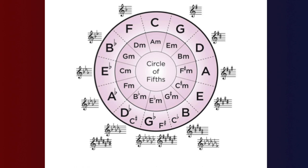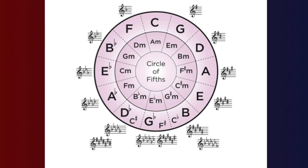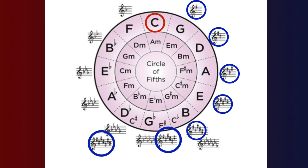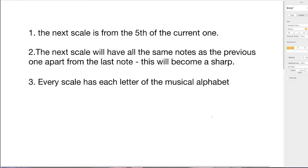I'd like to introduce the circle of fifths, which will be very useful for learning all of this. It's called the circle of fifths because if you start at C at 12 o'clock and go clockwise, the next scale is a fifth away — C, D, E, F, G, that's five. The things on the outside are the key signatures. C major has nothing beside it — no sharps or flats — G has one sharp, D has two, and so on until we max out with seven sharps.